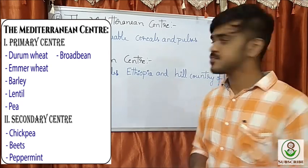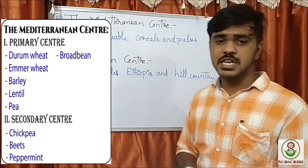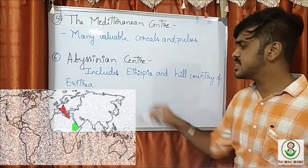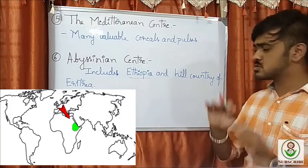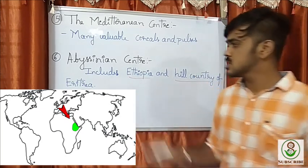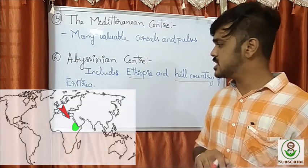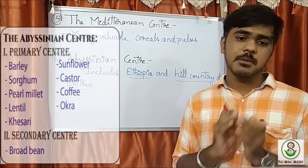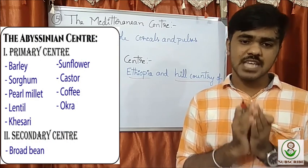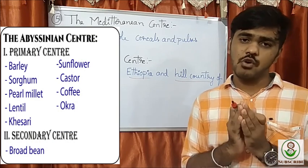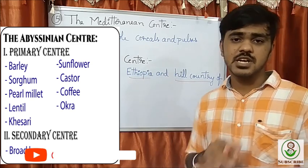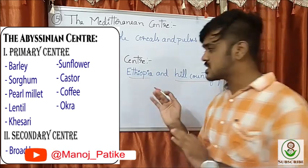Next is the Abyssinian center of origin, which includes the Ethiopia region, Egyptian parts, and the hill country of Eritrea. The primary crops originating here include barley, sorghum, pearl millet, lentil, castor, coffee, and okra. It is also the secondary center of origin for broad beans.